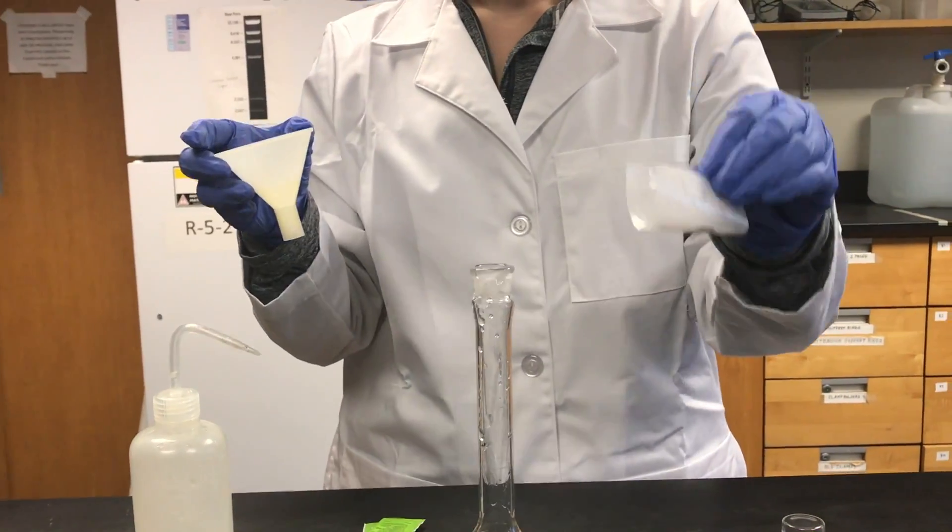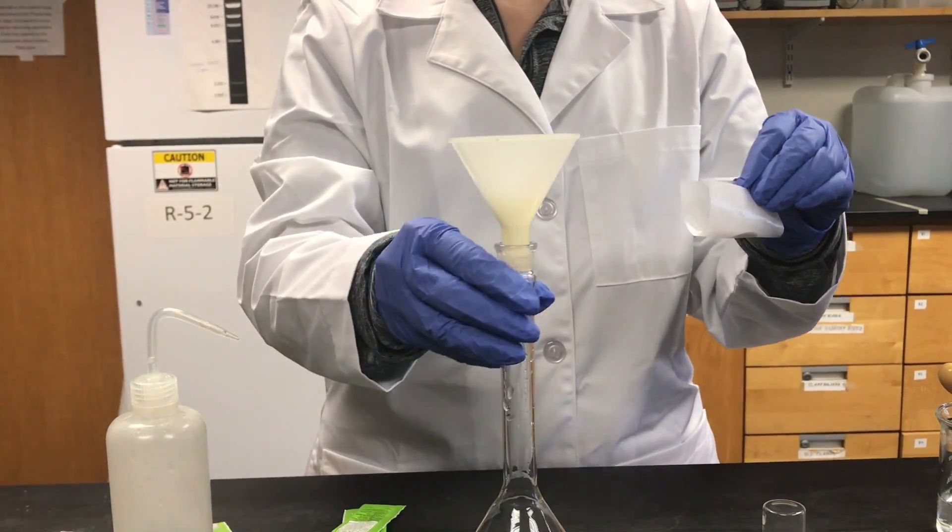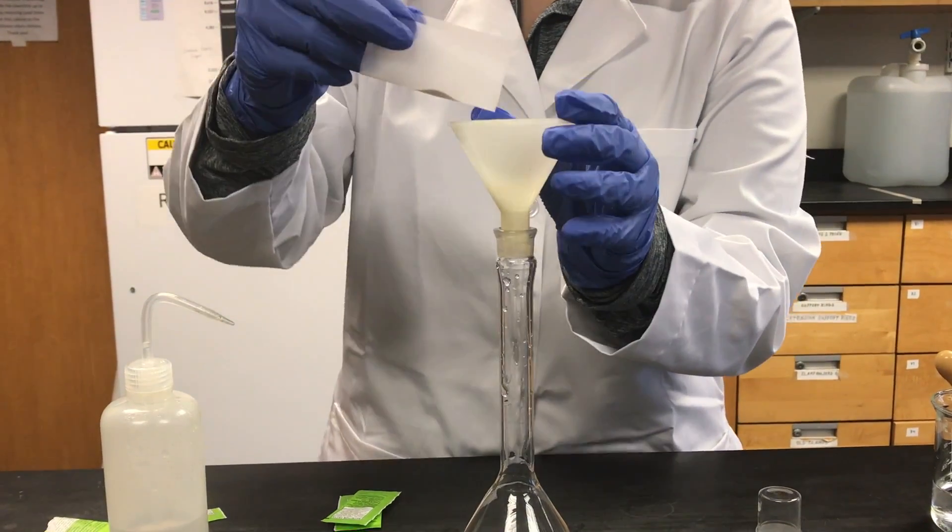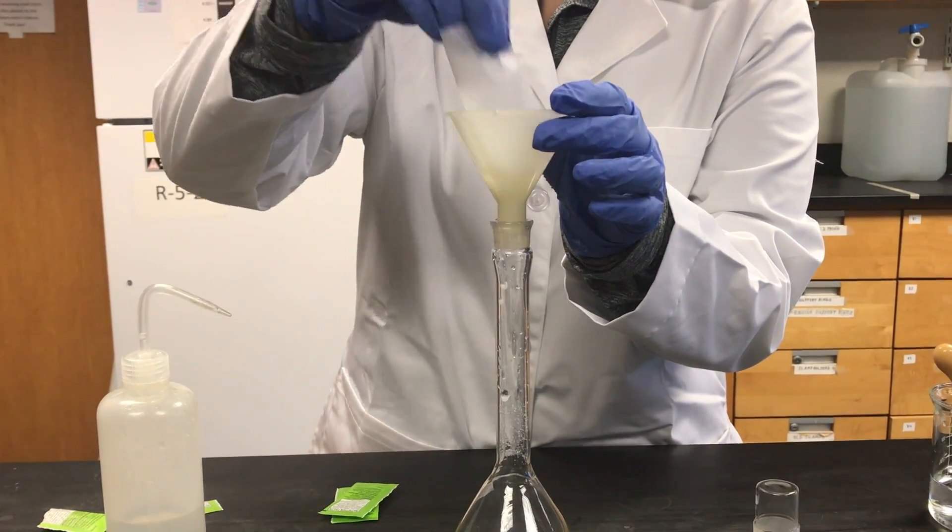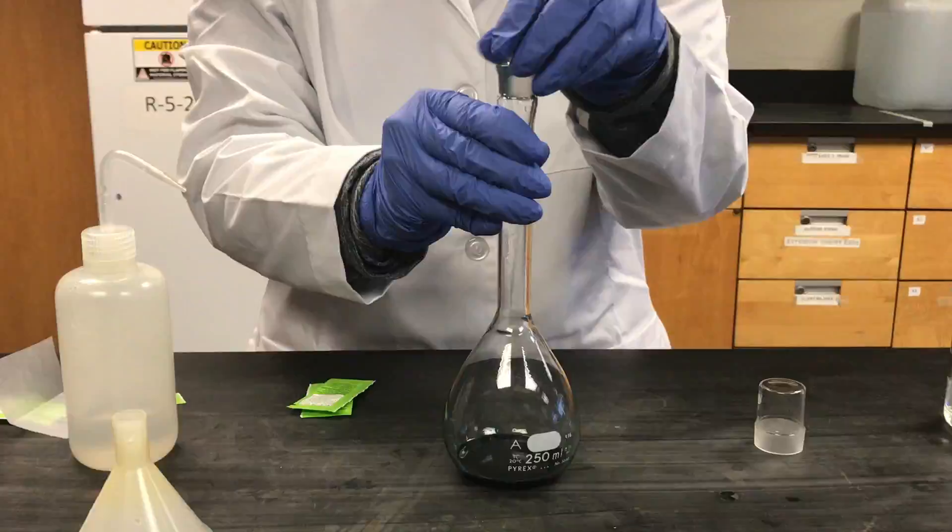For solid samples, place the plastic funnel into the volumetric flask and pour your sample in. This will ensure that none of the solid sample gets stuck in the stem of the funnel.